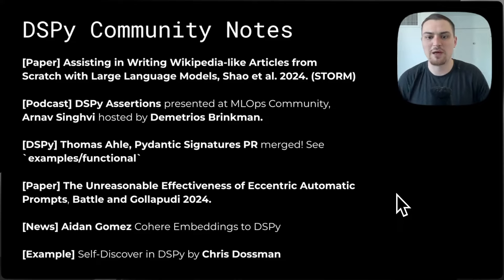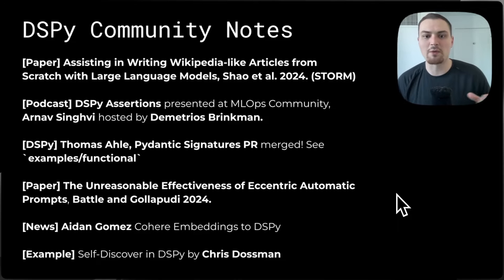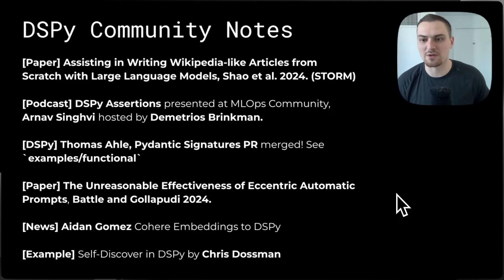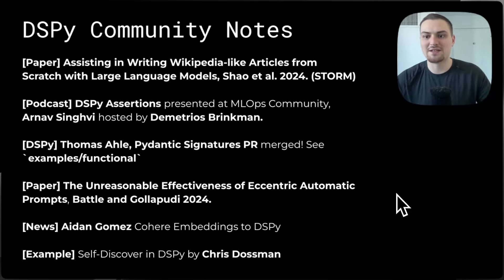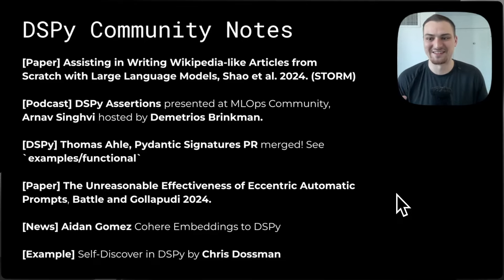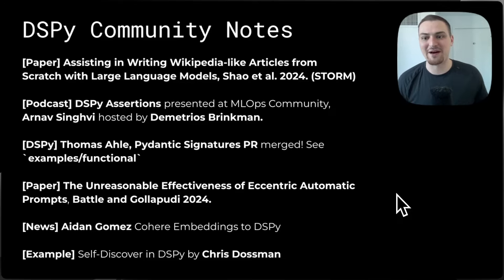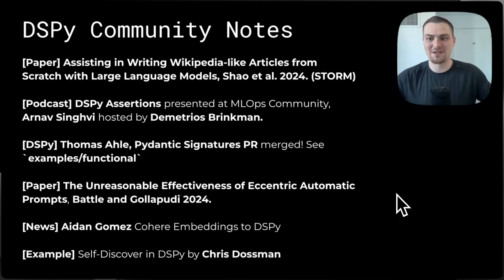Starting off, we have a new paper from Yijia Shao and others, as well as Omar Khattab — STORM — assisting in writing Wikipedia-like articles from scratch with large language models. This is an eight-layer DSPy system that basically takes topics and flushes them out into Wikipedia-length articles.